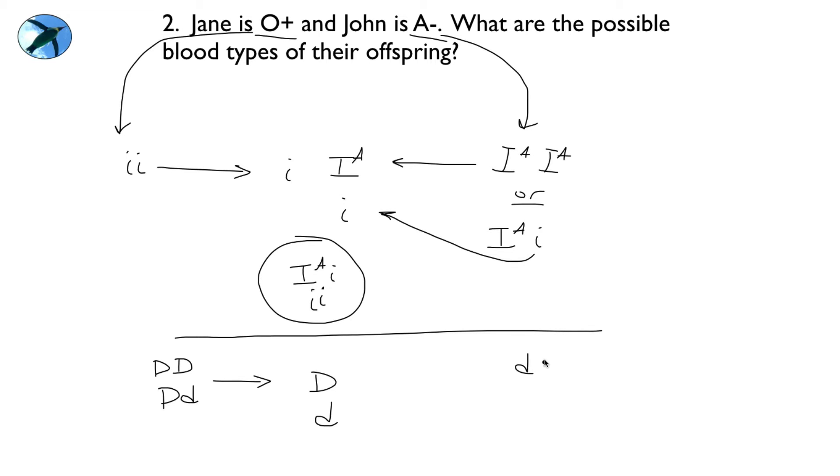On the other hand, John is negative. So the only way for him to be Rh negative is for him to be homozygous, right? So all of his sperm carry a little d.